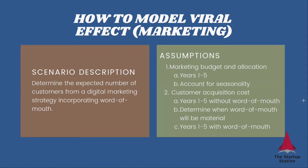For the digital marketing strategy, we need to figure out what your overall marketing budget is and how much of it is allocated towards the strategy in years one to five. And you want to account for seasonality — whether you distribute that budget evenly throughout the year or whether this distribution varies based on each month.